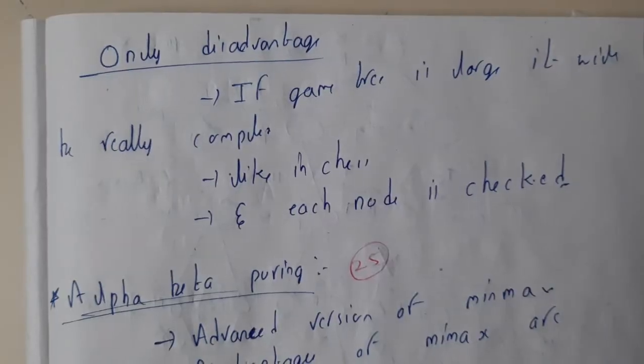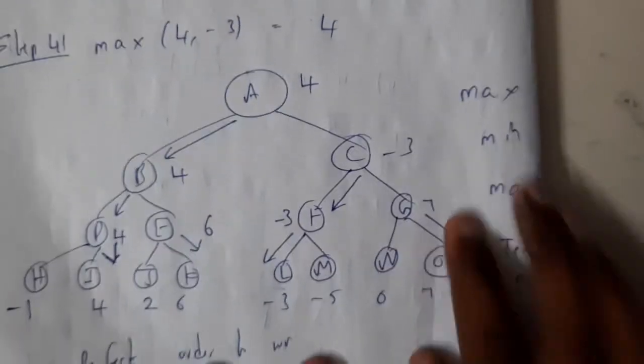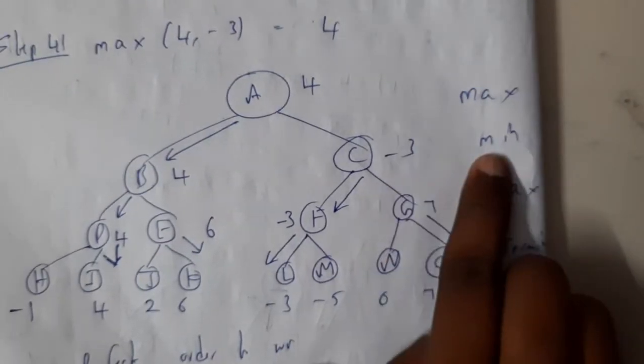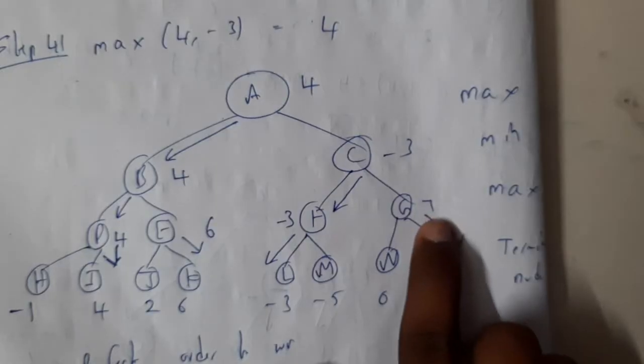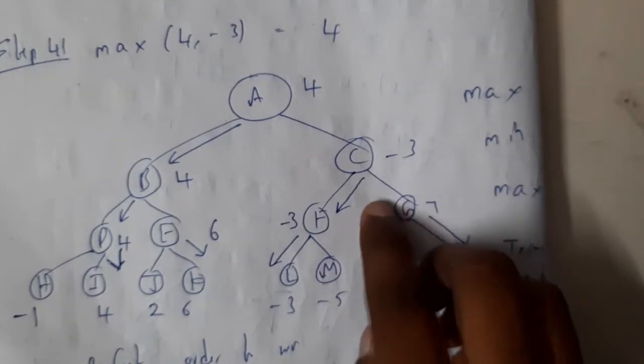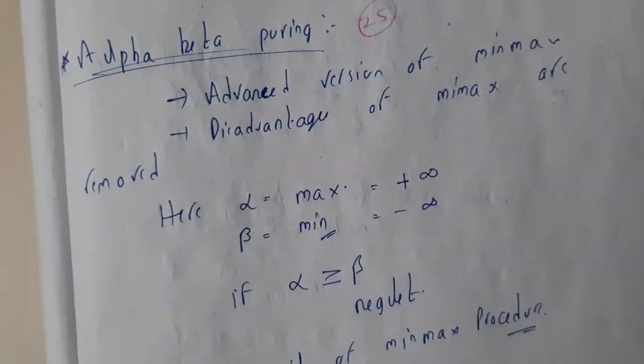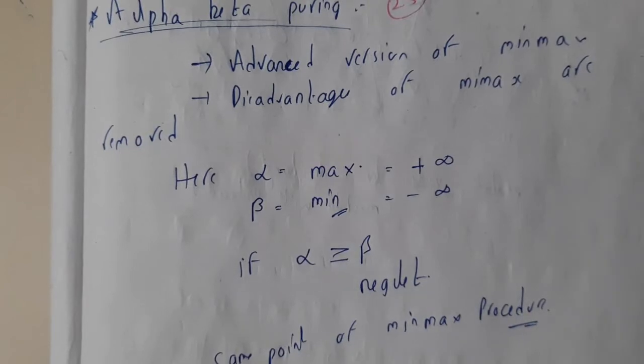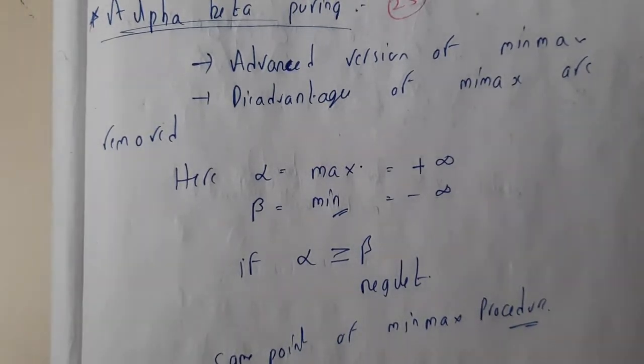If once it is minus three and we want minimum value, is there any need to go here and check seven and these two values? We can just neglect it, right? This approach has come in alpha-beta pruning. Once we are going through alpha-beta pruning, you will have a clear idea. Let us meet in the next tutorial. Thank you, thanks for watching.